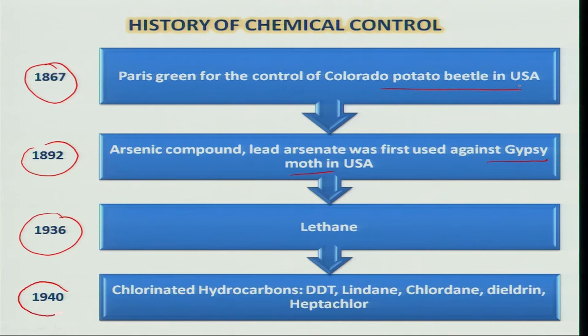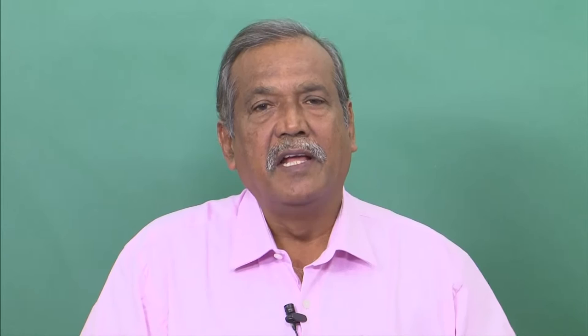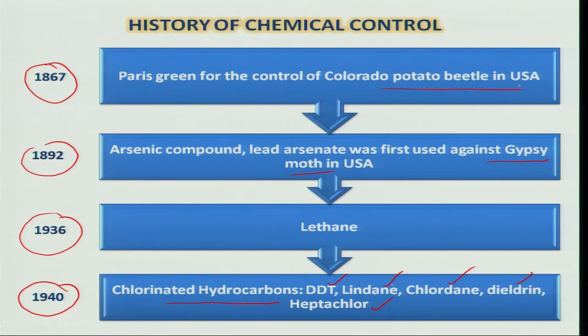In 1940, the synthesis of new insecticides started after identifying the insecticidal activity of DDT in 1939. One after another, many molecules were synthesized, which included majority of chlorinated hydrocarbons — DDT, lindane, chlordane, dieldrin, and heptachlor. Later, in 1946, organophosphates having a quick knockdown effect on insects were synthesized. Some important organophosphate insecticides are malathion, parathion, dichlorvos, and metasystox.